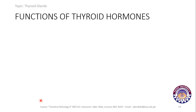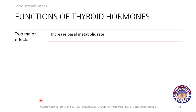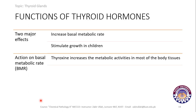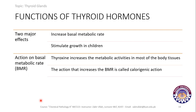The functions of thyroid hormones can be divided into two major categories: increased metabolic rate, and stimulation of growth in children. Regarding basal metabolic rate (BMR): T4 increases the metabolic activities in body tissues, thereby increasing the BMR. This action is called calorigenic action.